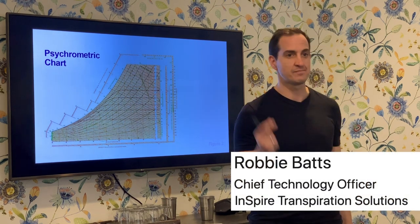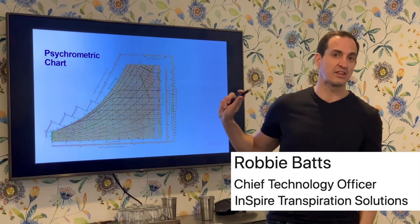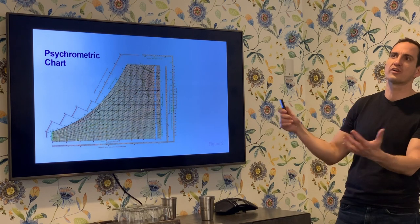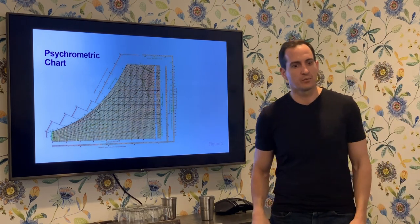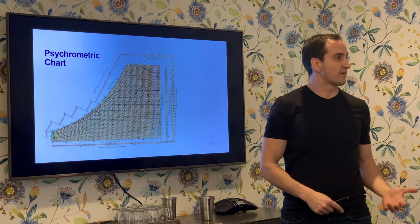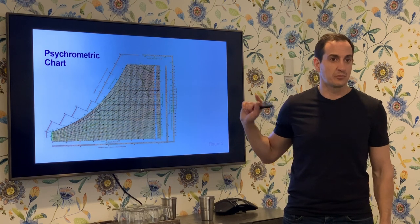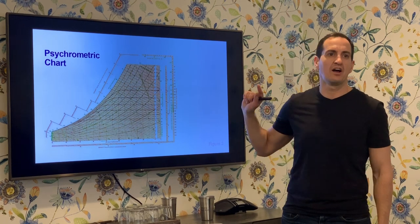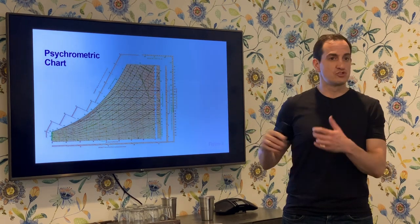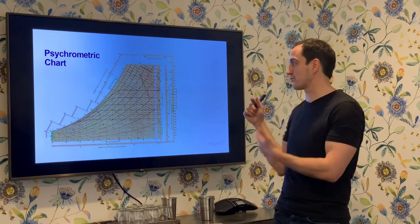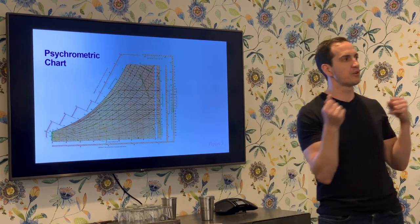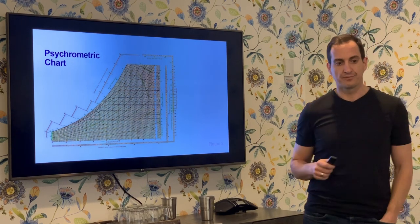We spend a lot of time as engineers using this tool — the psychrometric chart — which discusses the properties of air and the water in the air. We use it to figure out how to condition that air, whether it's heating, cooling, humidifying, or dehumidifying. This chart comes from hundreds of thousands of points of data collected in the field, and it has to do with how much water is in the air and how we go from one temperature or humidification point to another.